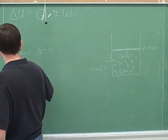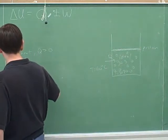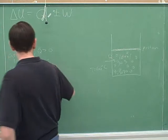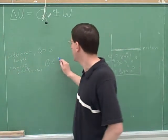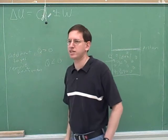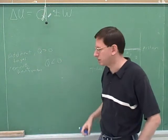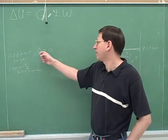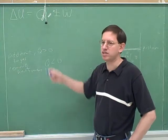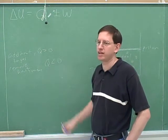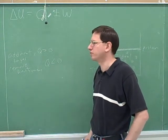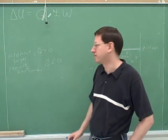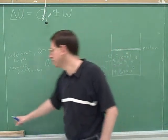And how about when you remove heat from the gas? We already were using these conventions last time when we used the Q equals MCAT formula. We saw that if you're adding heat, you would have a positive Q, and when you're removing heat, you would have a negative Q. That was especially important when we were doing vaporization or condensation, and we had to figure out whether Q should be positive or negative.